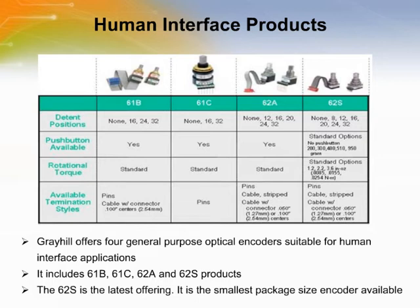Greyhill offers four general purpose optical encoders suitable for human interface applications. The first encoder was the 61B. Greyhill developed the 61C, 62A, and 62S products in order to satisfy evolving customer requirements for lower cost and smaller package sizes. The 62S is the latest offering and our smallest package size encoder.